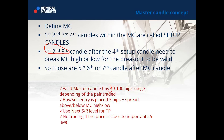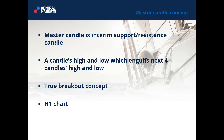Buy/sell entry is placed 3 pips plus spread above or below the master candle high and low. We use the next support/resistance level for take profit. No trading if the price is close to an important support/resistance level. The master candle is an interim support and resistance candle — a candle whose high and low contain the next four candles' highs and lows. It's called the true breakout concept, and we do it on a one-hour chart.